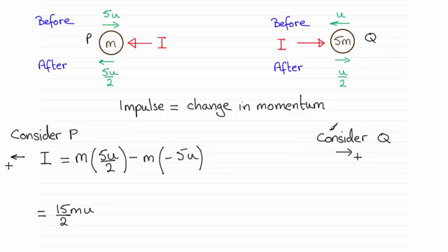Now you might have worked out the impulse by considering Q. So what you do then is you take your positive sense to the right, so you've got I as being in the positive sense, equals the change in momentum. But this time you've got a new mass, 5m, times the final velocity. That's going to be u over 2 in the positive sense.